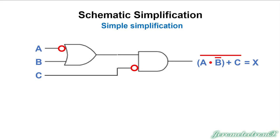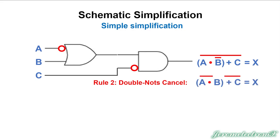Double NOTs cancel each other out, and this is the result of bubble pushing. Now we change the equation the same way we've always done. First, we cancel double NOTs — we've got two lines above the B, cancel those and rewrite. Next we change the lines and the signs: there's a line above a multiply sign and a line above an addition sign. We change those two signs to their opposites and the lines disappear. This is what we're left with.